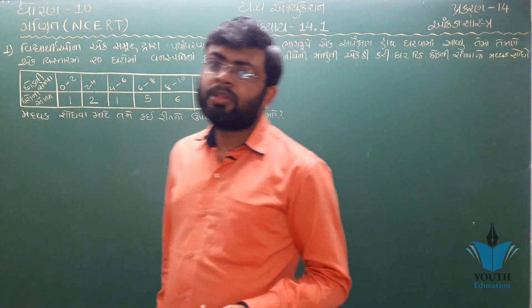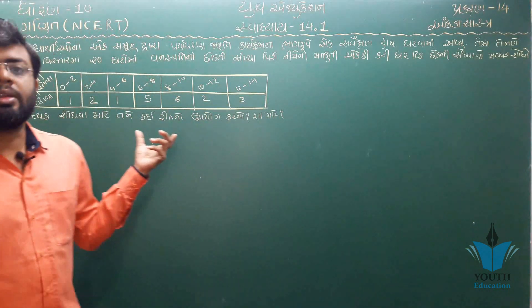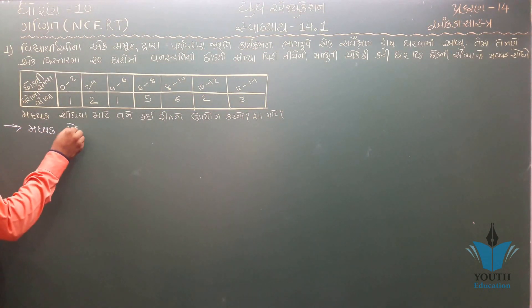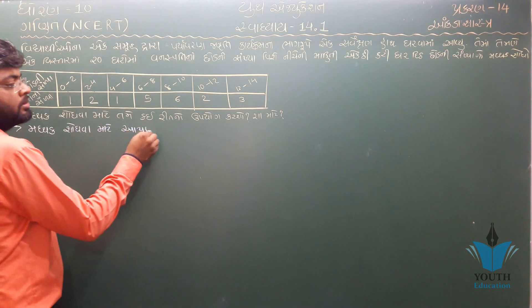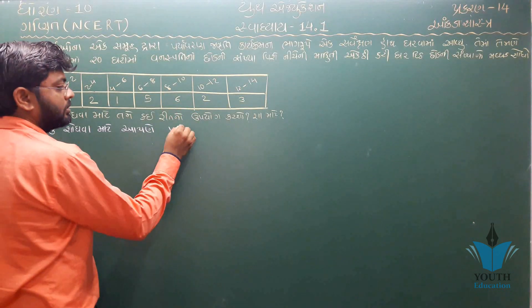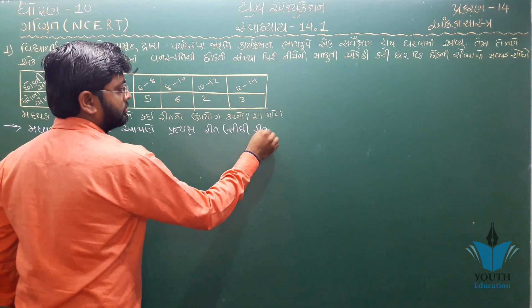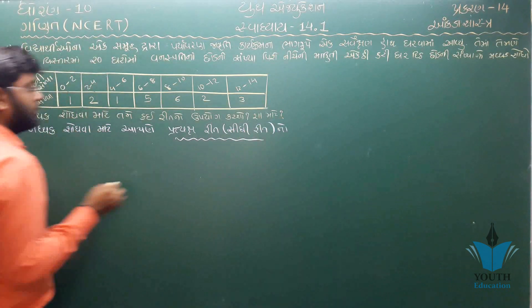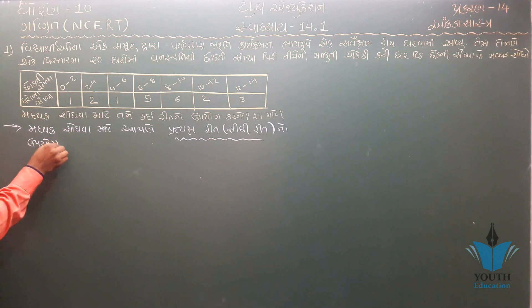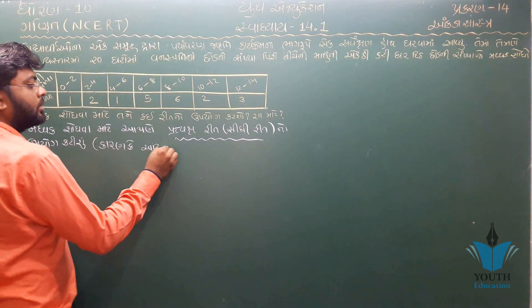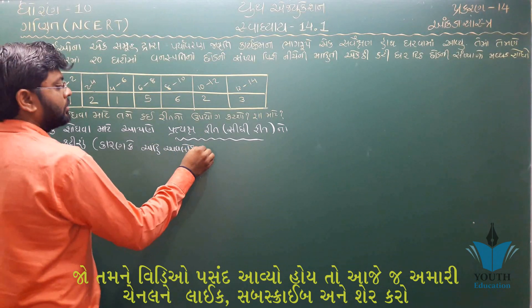તમે કઈ રીતે ઉપયોગ કરશો અને શા માટે? કોઈ પણ ધારેલો મધ્યક ની રીત અથવા તો ઉપયોગ કરીશું. કારણ પૂછો છો? આપણે કારણ લખીએ — કારણ કે અહીં અવલોકનો નાના છે.